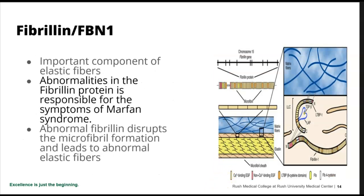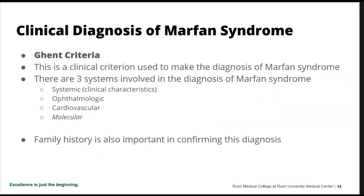Fibrillin, or FBN1, is an important component of elastic fibers, and abnormalities in fibrillin are responsible for the symptoms of Marfan syndrome. Abnormal fibrillin disrupts microfibrillar formation and leads to abnormal elastic fibers. The clinical diagnosis of Marfan syndrome uses the Ghent criteria, and there are three systems involved: systemic, ophthalmologic, and cardiovascular — with molecular testing now also playing an important role.